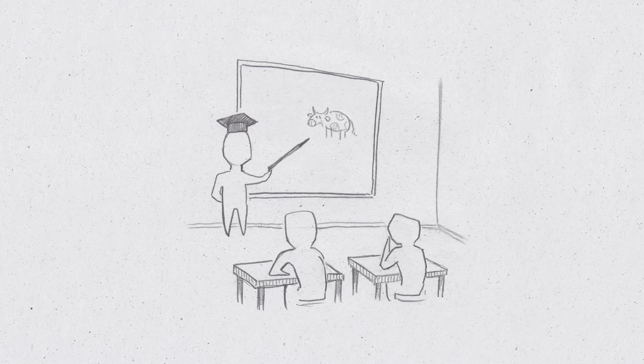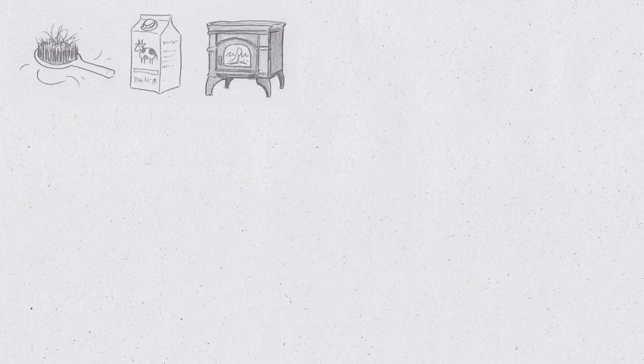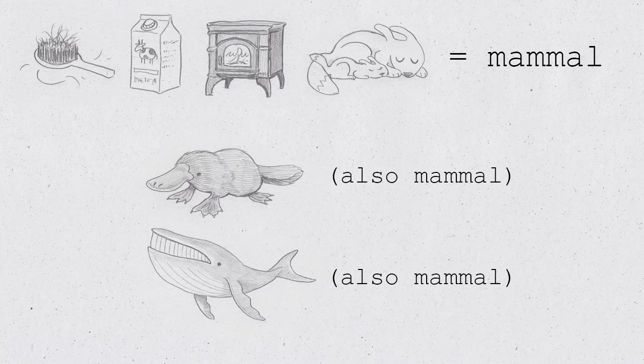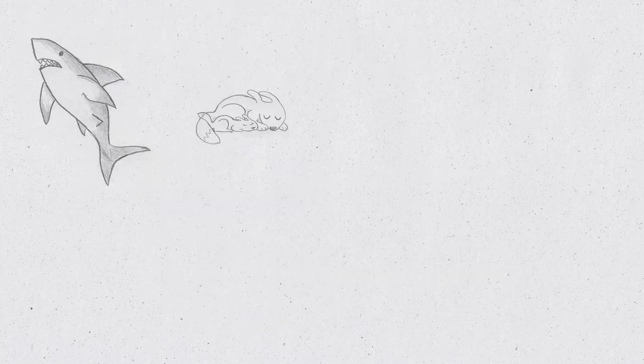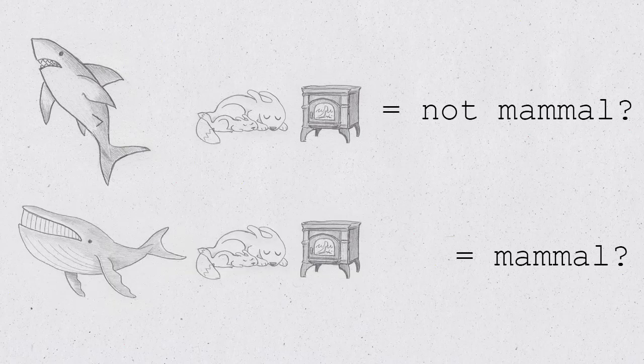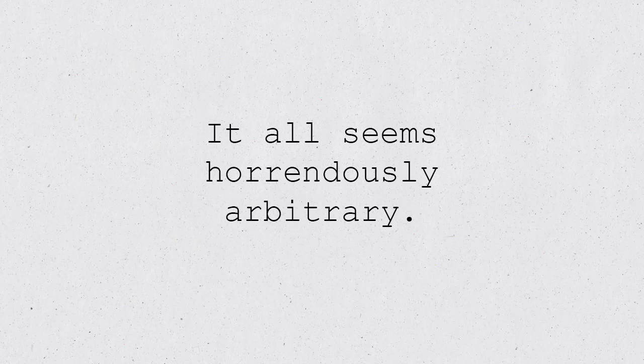At school, we tend to get taught biodiversity as a series of checklists. We're taught that if it has fur, makes milk, produces its own body heat, and gives birth to live young, it's a mammal. Except if it's a platypus, which lays eggs, or a whale, which doesn't have fur. Actually, some sharks give birth to live young and produce some of their own body heat, so why aren't they mammals if whales are? Is it that they produce milk? I don't produce milk. Does that mean that I'm not a mammal? It all seems horrendously arbitrary.